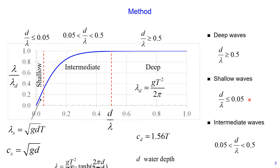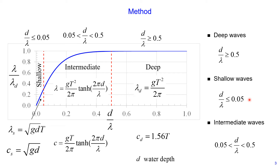Intermediate waves are defined when the ratio of water depth to wavelength is between 0.05 and 0.5. In this case, we use the following two equations. You can see, for example in wavelength, we have wavelength on both sides of the equation. So to solve this equation, we need to use iteration.